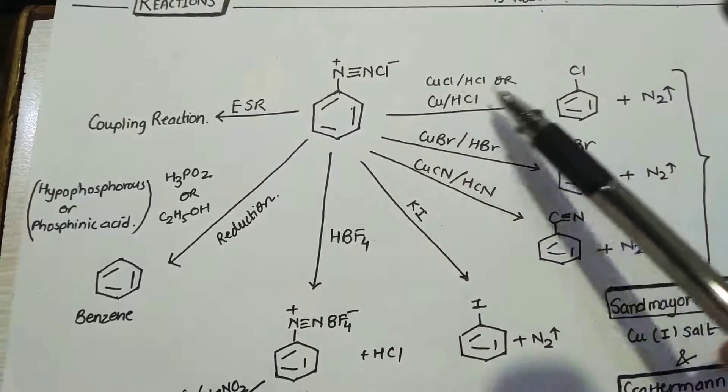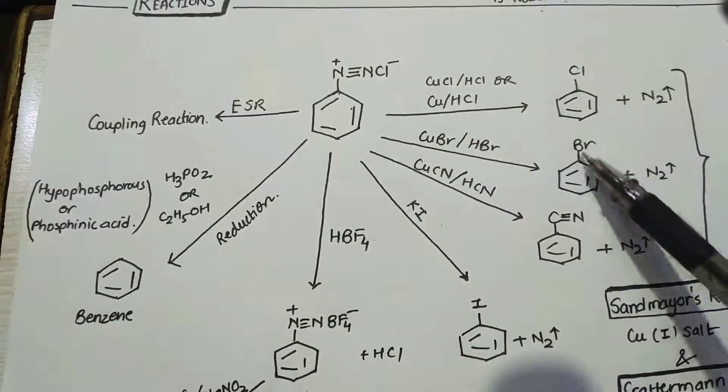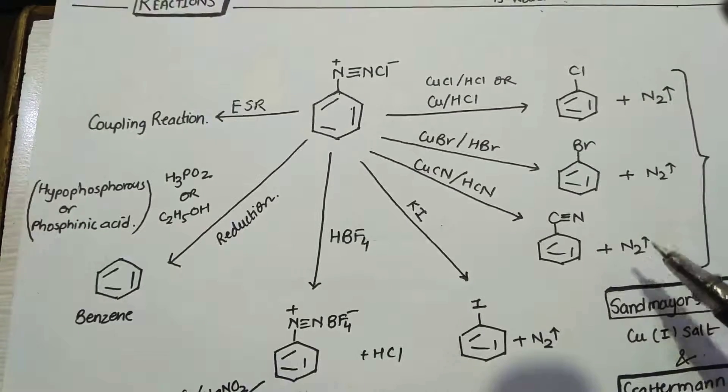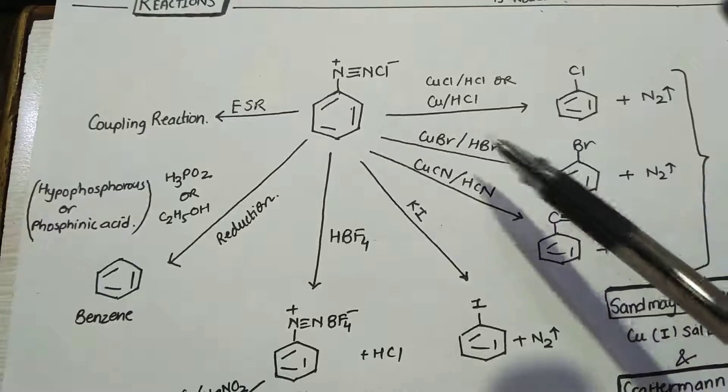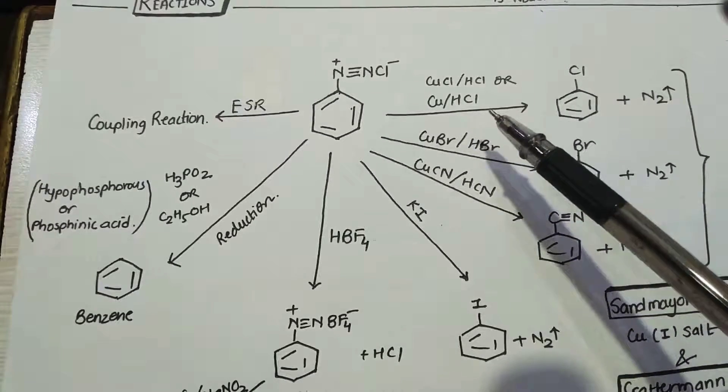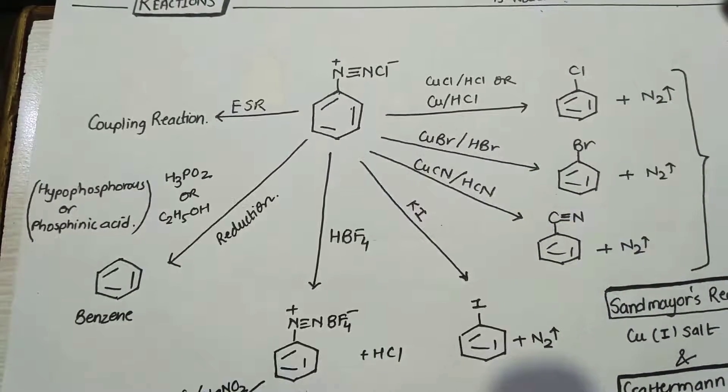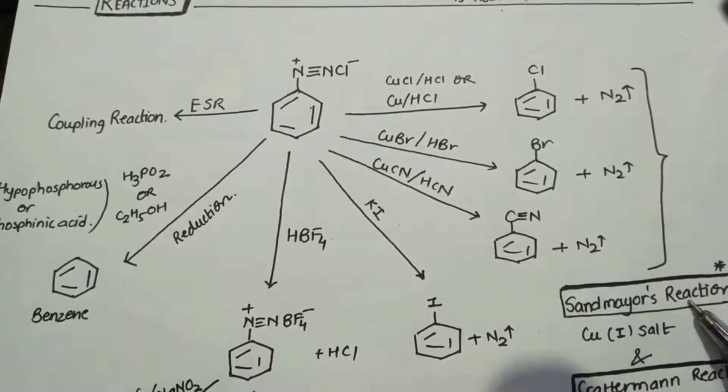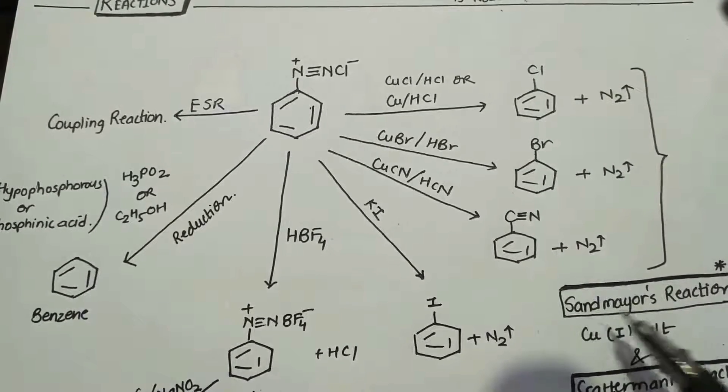So that will result in formation of chlorobenzene, bromobenzene, cyanobenzene, and N2 gas is liberated. Now the same reaction can be done using copper powder. If you use copper powder, then the reaction is called Gattermann reaction. But in Gattermann reaction, the yield is poor. So I have put an asterisk mark on the Sand Meier reaction that this is a better reaction. So remember, copper salt is used in Sand Meier, copper one salt, and in Gattermann, copper powder is used. Otherwise, the reaction is the same.